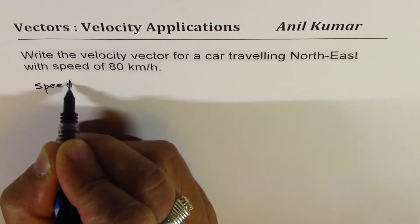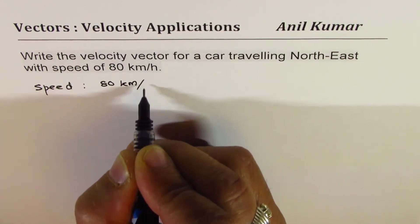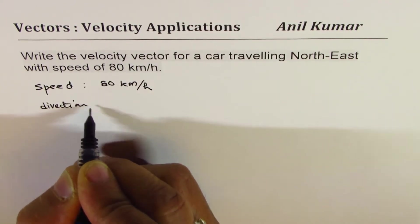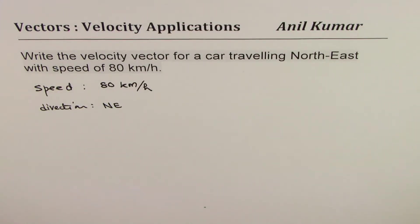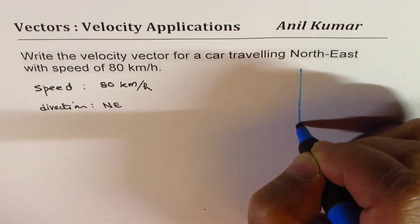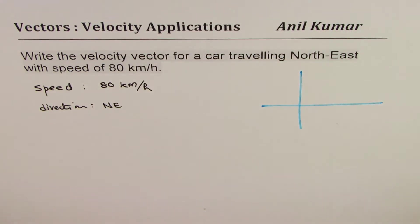So we are given the speed which is 80 kilometers per hour and we are also given the direction which is northeast. I like you to pause the video, answer the question, take it as a test question and provide the solution. Well let's look into the solution now.